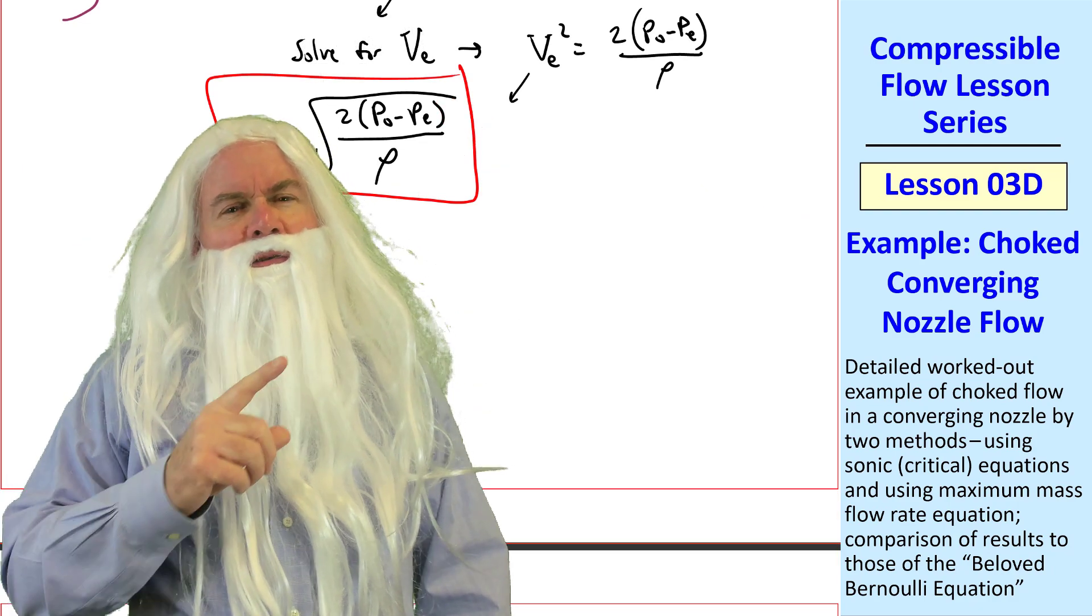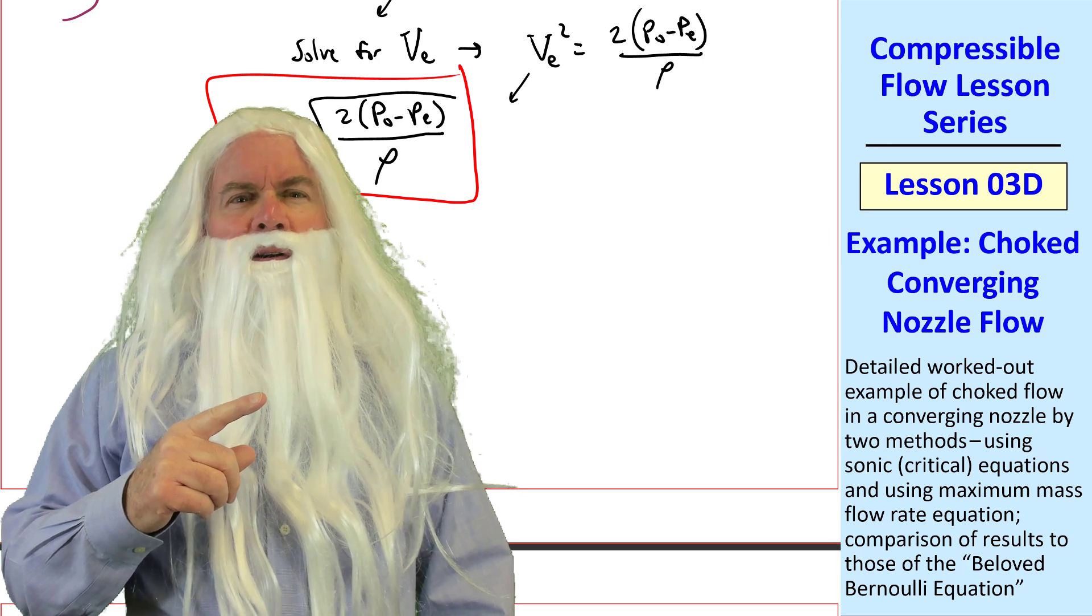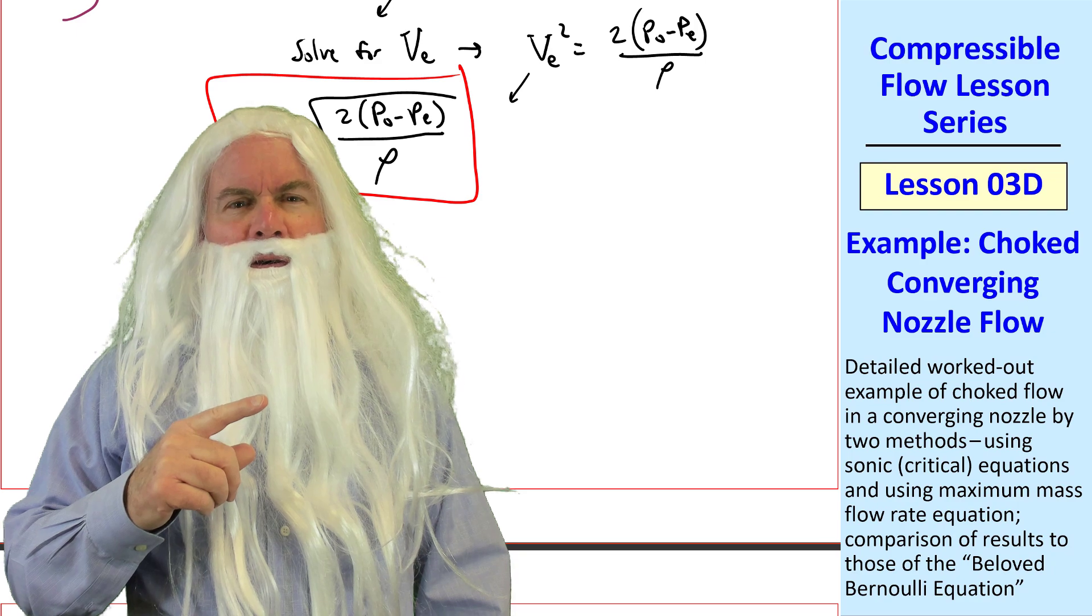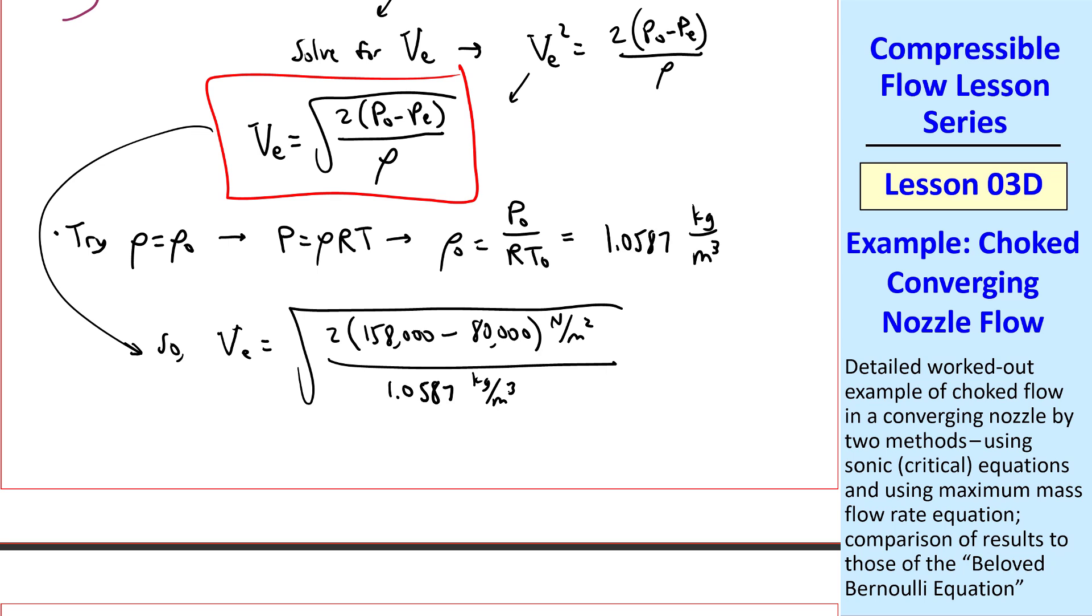Say, Sonny, which density should we use? The stagnation density or the density at the exit plane? Well, Pops, that's a good question. Let's pretend we know nothing about compressible flow effects, so let's use rho naught. From the ideal gas law, we can calculate rho naught, rho naught is P naught over RT naught. And when you plug in the numbers, which I won't show here, keeping many digits, I get 1.0587 kilogram per meter cubed. So VE would be the square root of 2 times P naught minus PE, which is less than P star if you do the calculations. And since I didn't actually give PE, I just chose some arbitrary value 80,000 newton per meter squared, over our density, and our unity conversion factor. And we get 384 meters per second, which is not very close to the correct answer, which is 417 meters per second. This was for the case with rho equal rho naught.